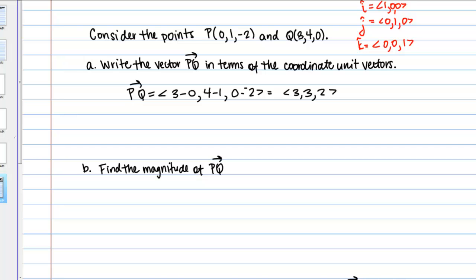Now from here, we can write this in terms of the coordinate unit vectors by just thinking about it in terms of its X, Y, and Z components. This goes three units in the X direction, so I can write that part of things as 3I, the unit vector I. Then it goes three units in the Y direction, so I'm going to write that as plus 3J. And then two units in the Z direction, so plus 2K, and that's it. That's the vector in terms of the coordinate unit vectors.